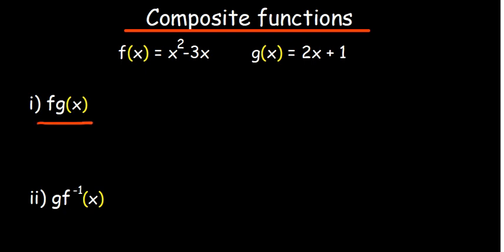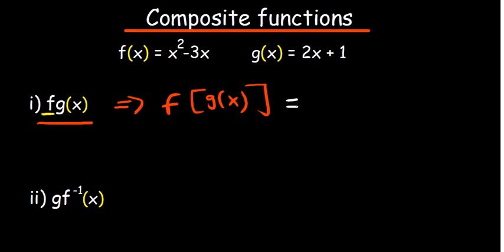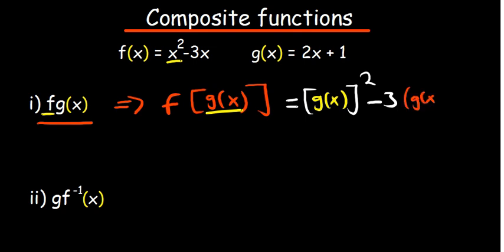Now when you say f(g(x)), this is a function of a function. What it means is we are dealing with f(x), and wherever there is x we are putting g(x). That's the interpretation — the moment you understand that, it becomes easy. So at every point in the first function, in this case f(x), we are going to put g(x), just like we put 2 earlier. So where there is x, we put g(x), and g(x) is x squared minus 3.